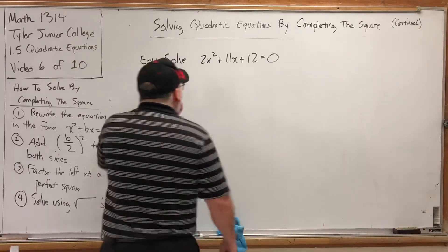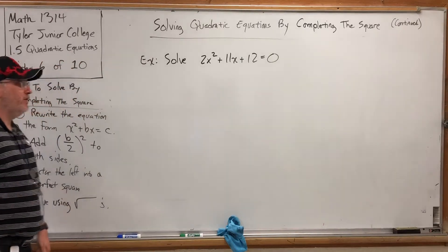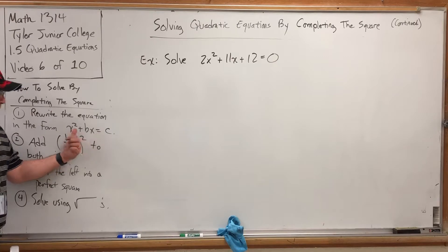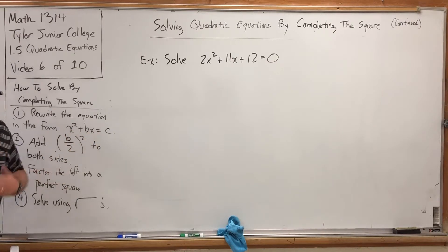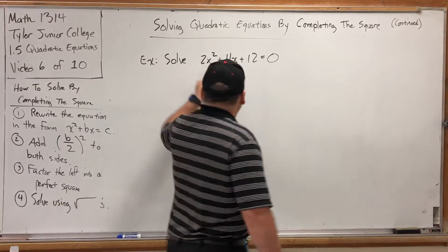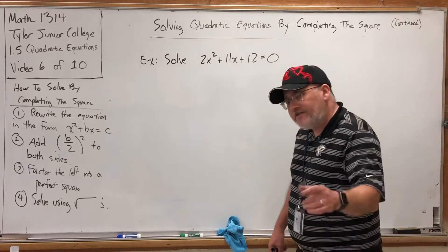Allow me to explain. The procedure for solving by completing the square begins by writing the equation in the form x squared plus an x term equals a constant term. Specifically, the coefficient of the x squared is 1. If your x squared has a coefficient besides 1, you have to fix that.